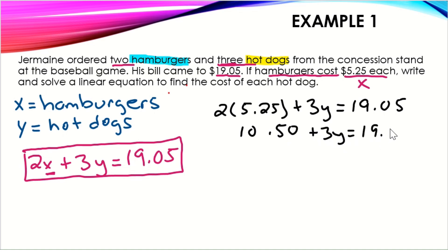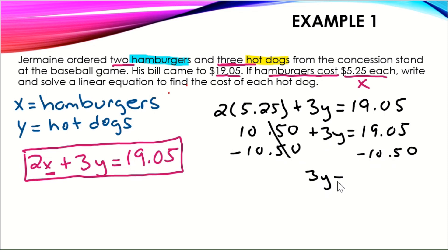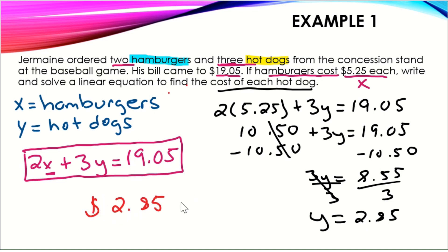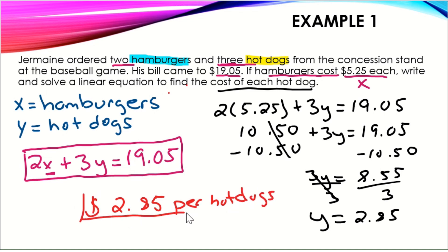So we have 10.50 + 3y = 19.05. This is a two-step equation — subtract 10.50 from both sides. That gives us 3y = 8.55. Dividing both sides by 3, Y equals 2.85. So the cost of each hot dog is $2.85 per hot dog. We've written our linear equation in standard form and found the cost of one of our items.